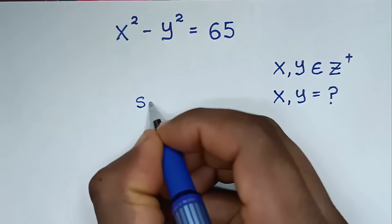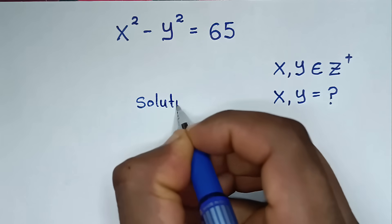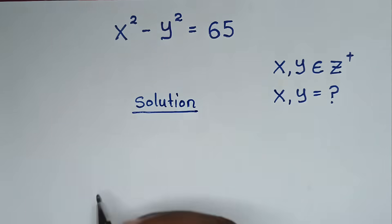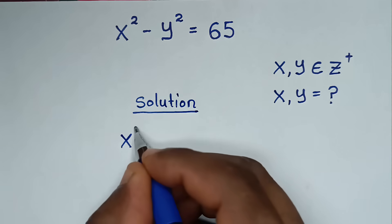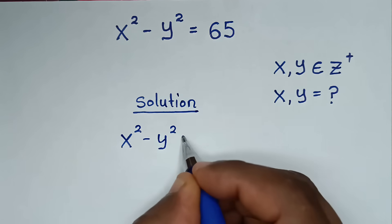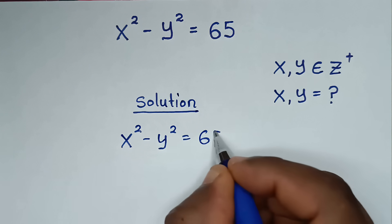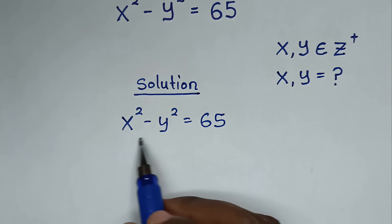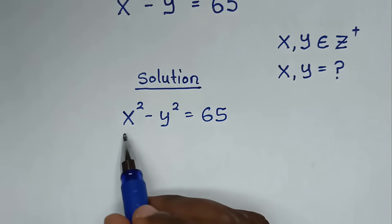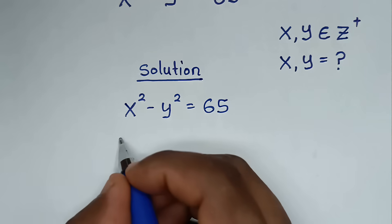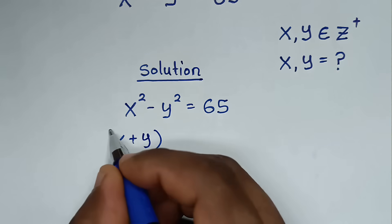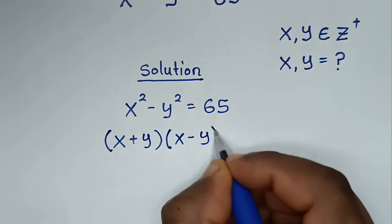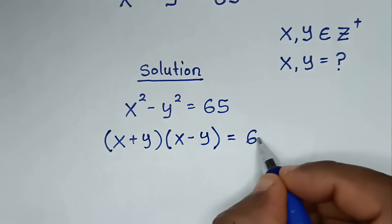Now, solution. From our problem, which is x squared minus y squared is equal to 65, we note that x squared minus y squared is in the form of a difference of two squares. So this is the same as (x plus y) times (x minus y) is equal to 65.